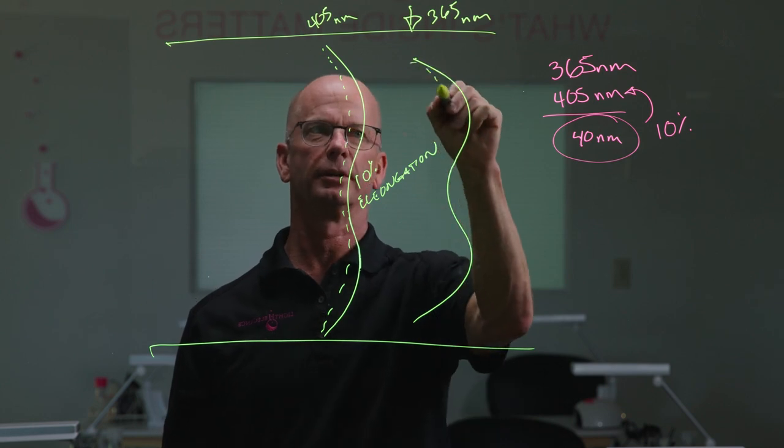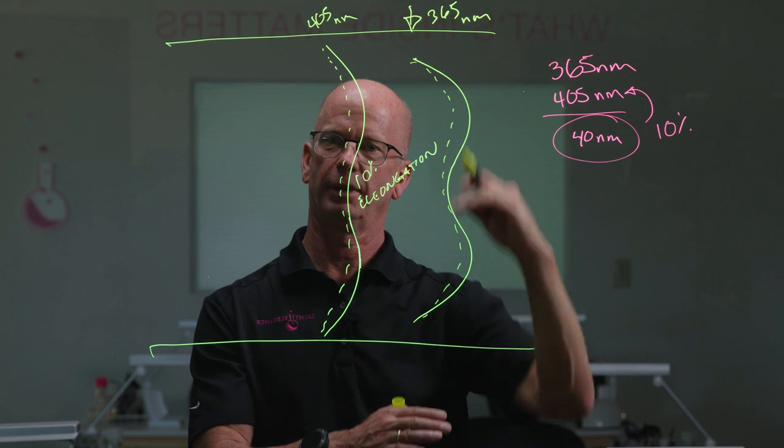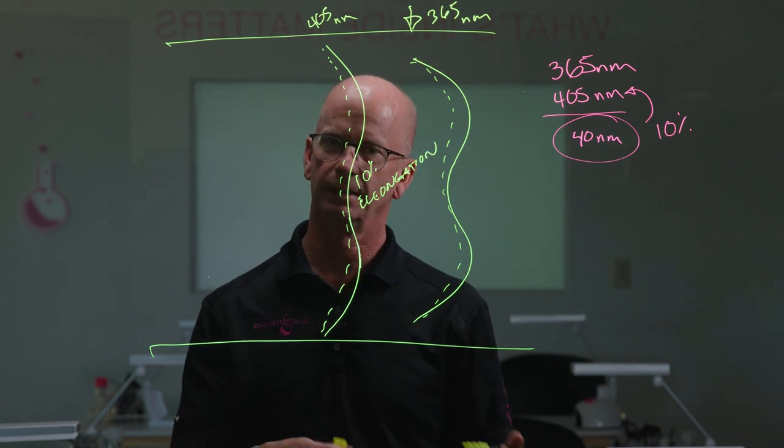Where here at 365 nanometers, it's a shorter wavelength. And as a result, it penetrates less deeply into the pigmented system.